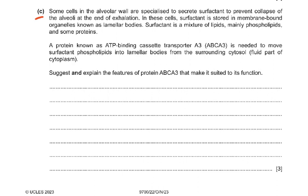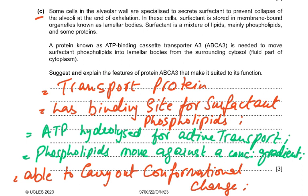Suggest and explain the features of protein ABCA3 that make it suited to its function. It is a membrane transport protein with a binding site for the surfactant phospholipids. ATP is used for active transport to provide energy, as the phospholipids move against a concentration gradient from lower to higher concentration. This is possible because the protein is able to carry out a conformational change — a change in shape.